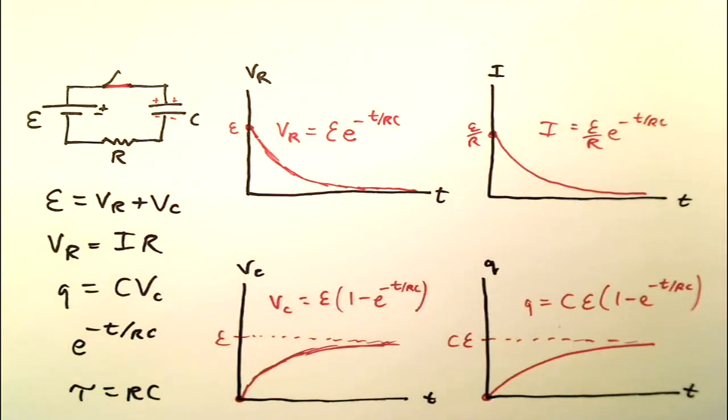So this graph looks very similar to that because they are proportional just as those two look similar. Between these four formulas, you can answer just about any question that anyone is going to ask you about this RC circuit.